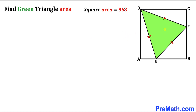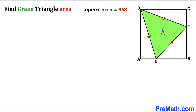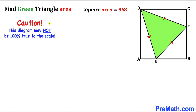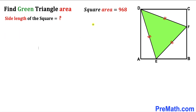Welcome to pre-math. In this video we have got a green shaded triangle DEF fully inscribed in a square ABCD, as you can see in this diagram. The area of this square is 968 square units, and moreover all the side lengths of this triangle are equal, so this is an equilateral triangle. Our task is to calculate the area of this green shaded triangle. Please don't forget to give a thumbs up and subscribe, and keep in mind that this figure may not be 100% true to scale. Let's get started.